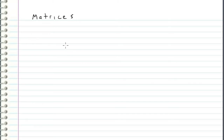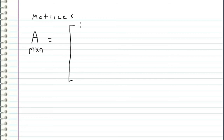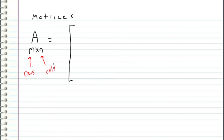In this video, I wanted to talk about matrices. We can define an M by N matrix to be a two-dimensional array of numbers, where M represents the number of rows and N represents the number of columns.